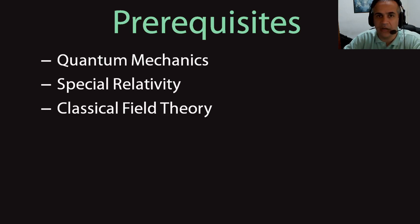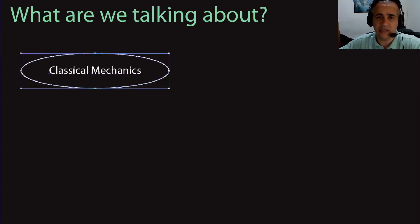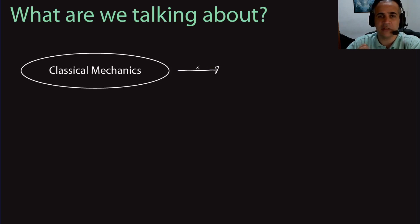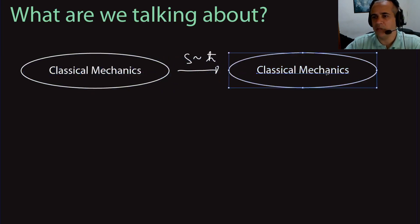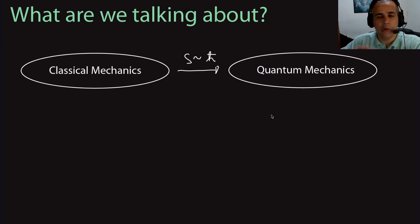Let's get down to the subject itself. The main objective of this course is to essentially extend classical mechanics. One direction we could go is into the microscopic: when the action of your system is of order h-bar, you leave the realm of classical mechanics and enter quantum mechanics. Another direction is to higher energies and higher speeds, where velocities approach the speed of light, and you need special relativity.